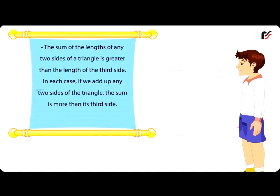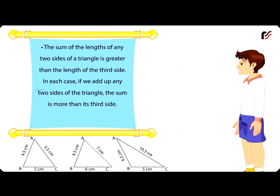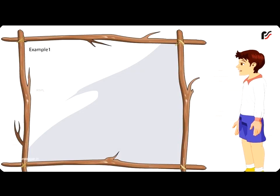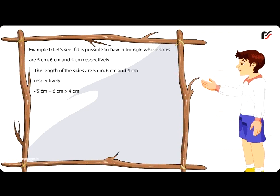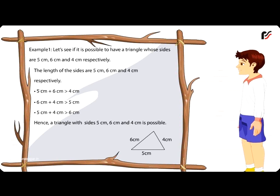The sum of the lengths of any two sides of a triangle is greater than the length of the third side. In each case, if we add up any two sides of the triangle, the sum is more than its third side. Example 1: Let's see if it is possible to have a triangle whose sides are 5 cm, 6 cm and 4 cm. 5 + 6 > 4, 6 + 4 > 5, 5 + 4 > 6. Hence, a triangle with sides 5 cm, 6 cm and 4 cm is possible.